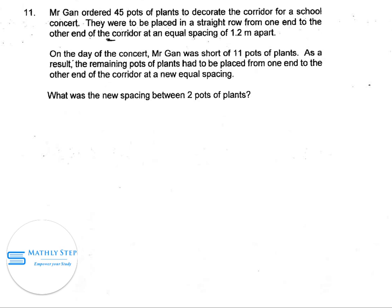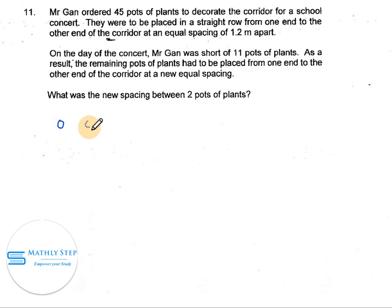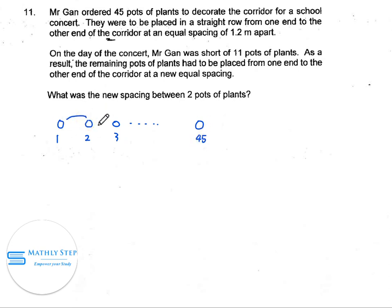For this question, it is important for us to know that the number of plants and the spacing are different. So we draw the actual scenario first. Let's say this is one plant, this is another plant, this is a third plant, and the total is supposed to have 45 plants — so 1, 2, 3, until 45. And spacing-wise, from here to here, from here to here, this is one spacing, this is another spacing.